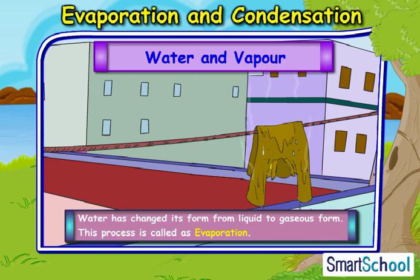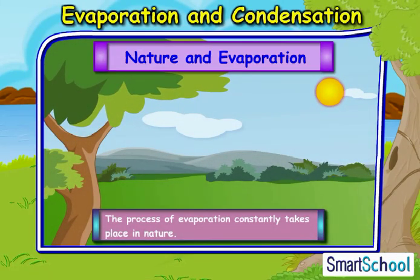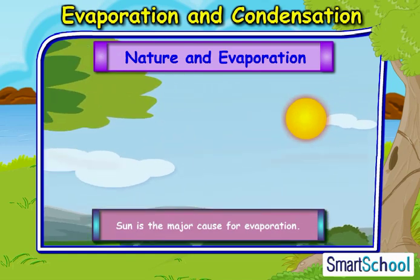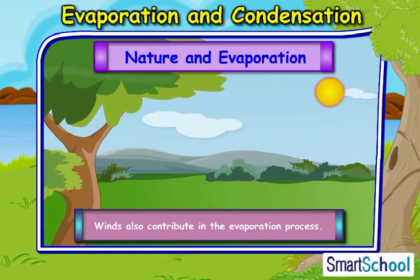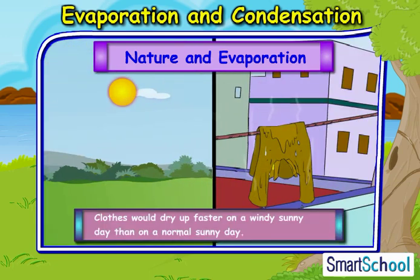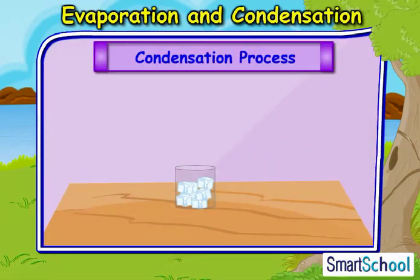The water in the coat has been converted into gaseous form and transferred into the air through a process called evaporation. Evaporation is a process by which water is converted from its liquid form to the gaseous form. The process of evaporation constantly takes place in nature. The Sun is the major cause for evaporation, and winds also contribute. Thus, clothes would dry up faster on a windy sunny day than on a normal sunny day.